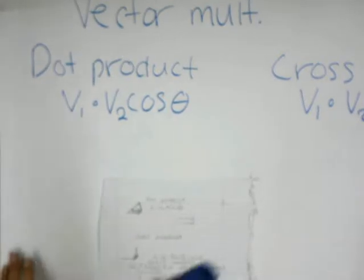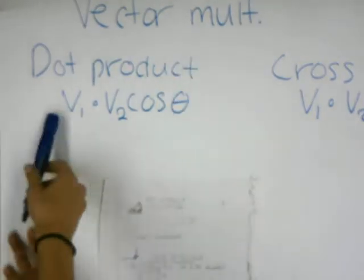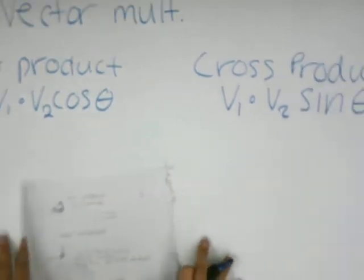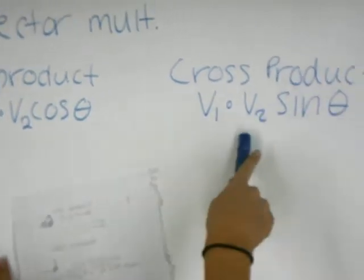Okay, if the equation for vector multiplication for dot product is V1 times V2 cosine theta, and for cross product is V1 times V2 sine theta,